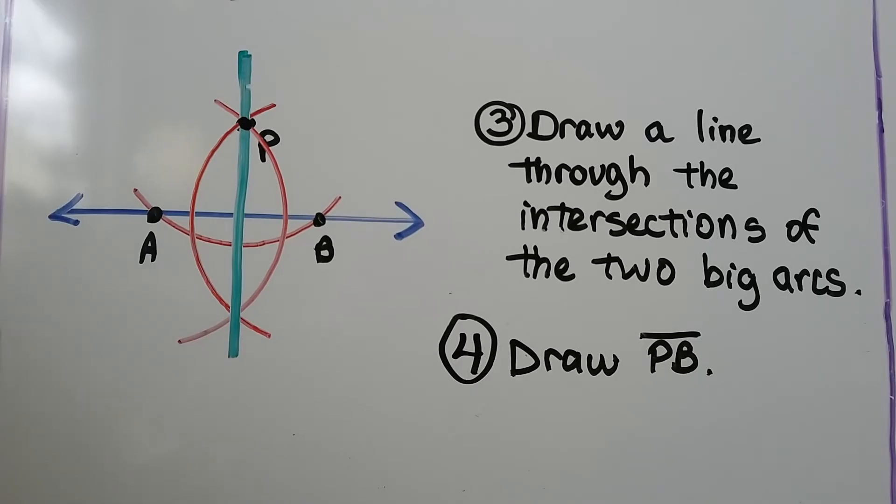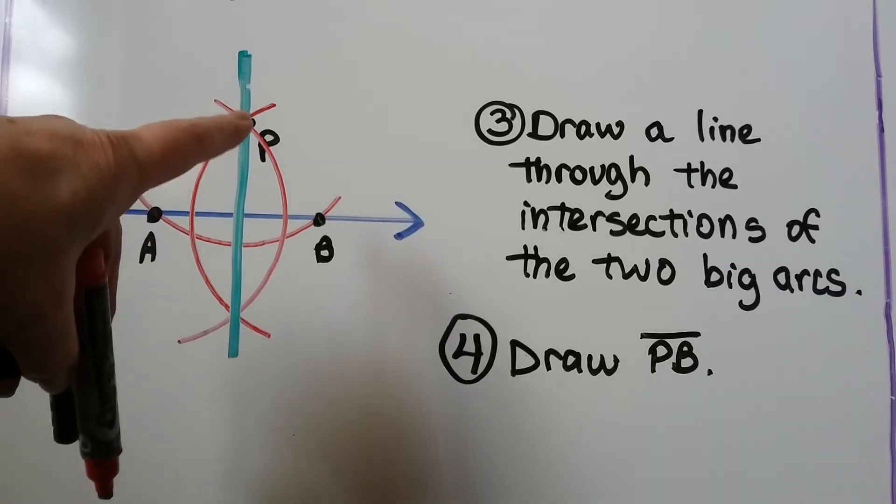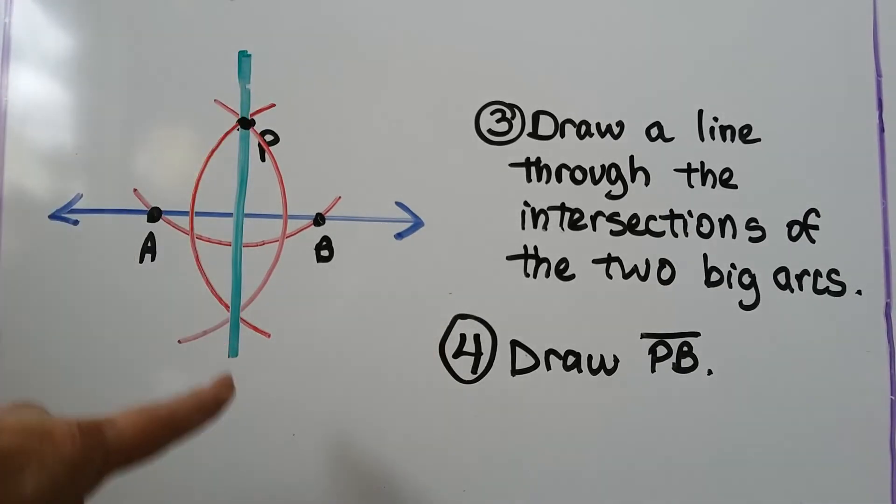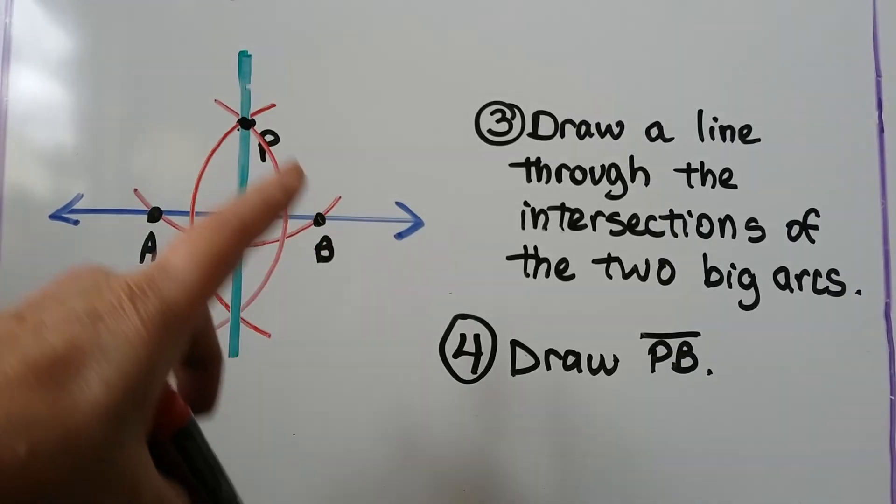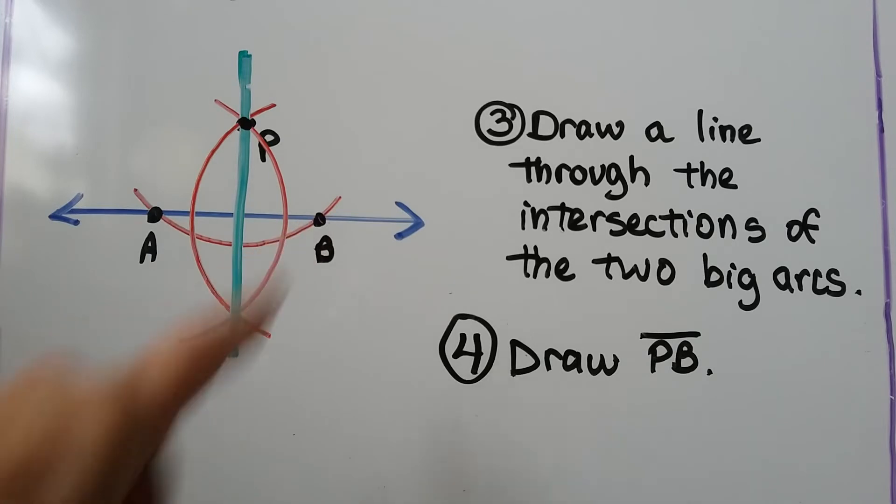Now take the straightedge and draw a line through the two intersections. We've made a perpendicular bisector. Connect P to B with a segment, and we've made a right triangle with a compass and straightedge.